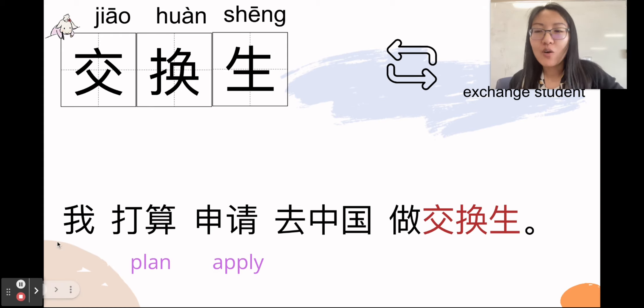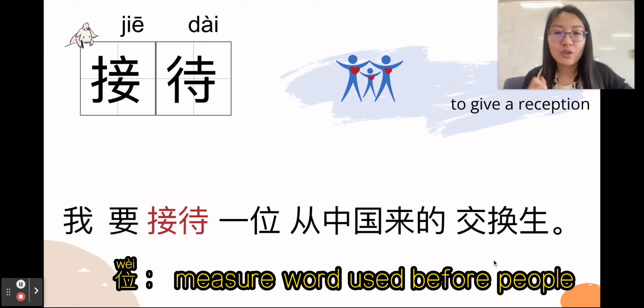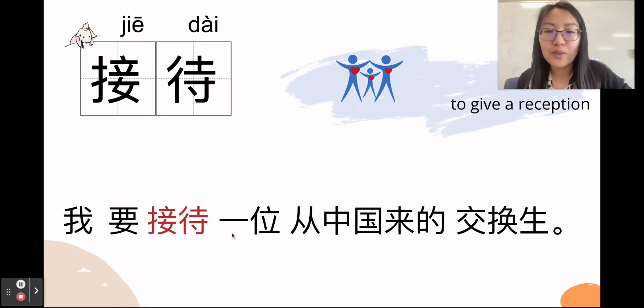Next word, very important, you don't know, it's okay. So it's called 接待, it means to host, to give a reception. So you are very friendly, so you're going to host this exchange student. 所以我要接待, 接待一位从中国来的交换生. So here, 位 is a measure word for student. So here, if you really don't recognize, just turn to 一个, right. You know the measure word is after number, 一个, 从中国来的交换生.